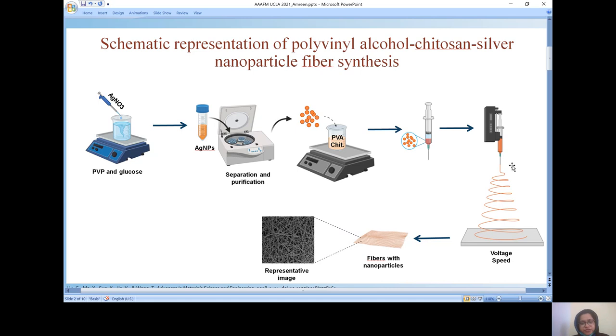The first part includes the formation of silver nanoparticles, which was done through polyvinyl pyrrolidone and glucose in which the silver nitrate solutions were dropwise added and further the separation of silver nanoparticles after its formation was done through centrifugation process.